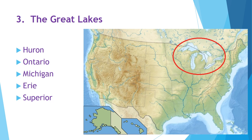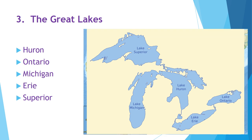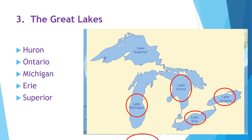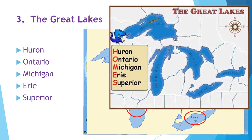Many inland port cities were established along the shores of the five Great Lakes: Huron, Ontario, Michigan, Erie, and Superior. The first letter of each of their names spells out the acronym HOMES.